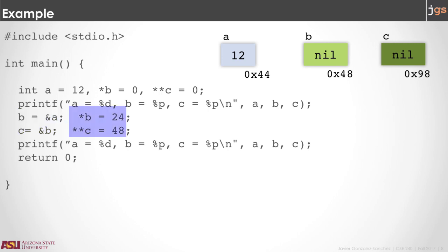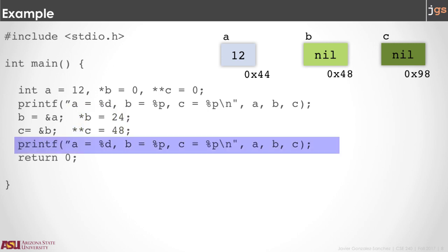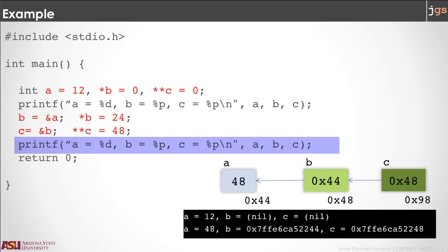And here you can use B or C to change the value in the variable A. So asterisk B equals 24 will store 24 in the variable A. But later, asterisk asterisk C equals 40 is going to store 40 in the variable A because of the pointing. So when you print the value of A, B, and C, as you can see, A is going to be equal to 40. B is pointing to A and C is pointing to B.